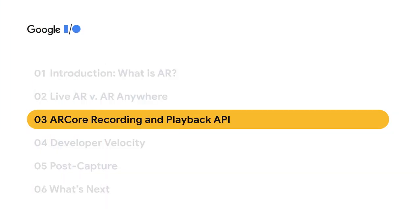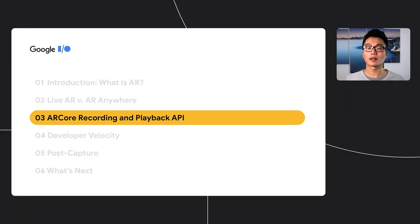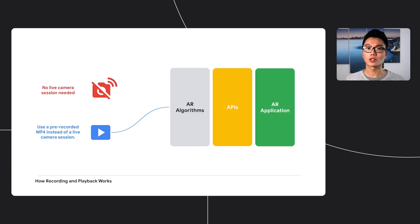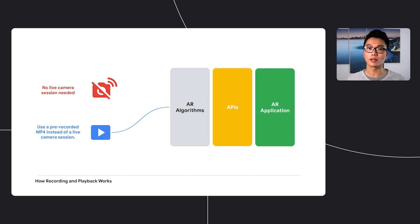Normally, AR experiences require a live camera session feed, with a platform that takes that live session feed and runs all the algorithms necessary to discover planes, place virtual objects into the physical world, and so on. The recording and playback functionality helps remove the live camera session requirement. The recording API stores a camera's video stream, as well as IMU data, planes, or any other custom metadata you, the developer, choose to save, in an industry standard MP4 format.